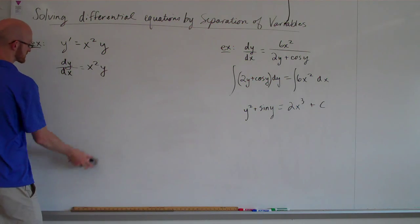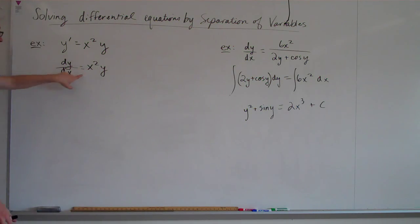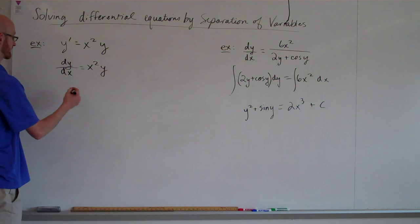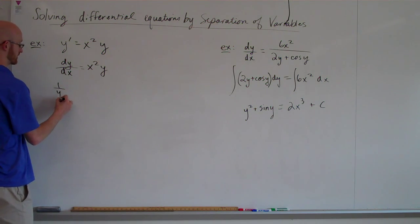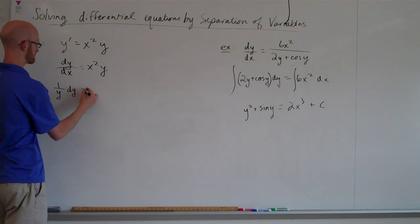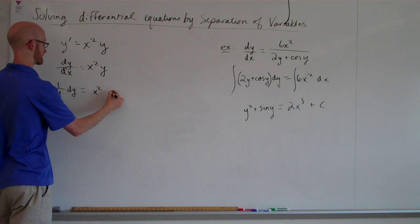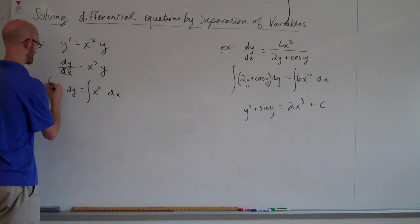The other thing is, you could just look back here and say, I'm going to divide the y over and multiply the dx over. In either case, you get 1 over y dy, and you get x squared dx. Now we integrate.